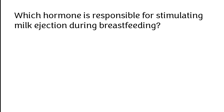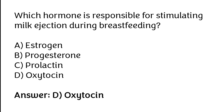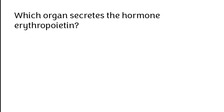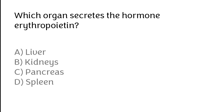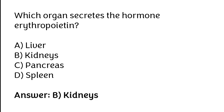Which hormone is responsible for stimulating milk ejection during breastfeeding? Estrogen, progesterone, prolactin, oxytocin. The correct answer is option D: oxytocin hormone is responsible for stimulating milk ejection during breastfeeding. Which organ secretes the hormone erythropoietin? Liver, kidneys, pancreas, spleen. The correct answer is option B: kidneys.